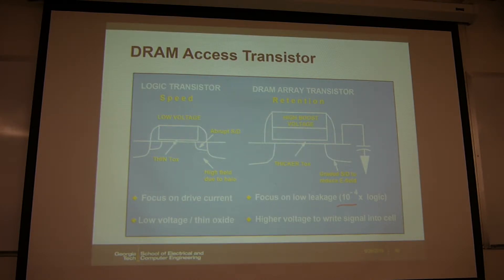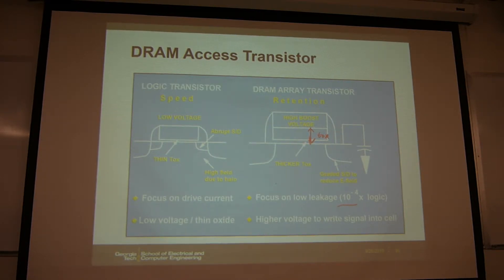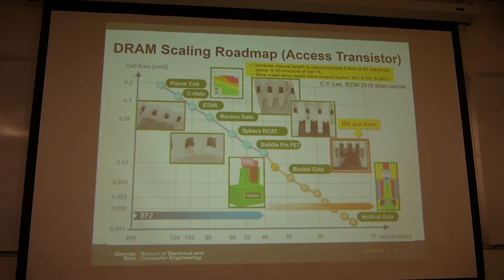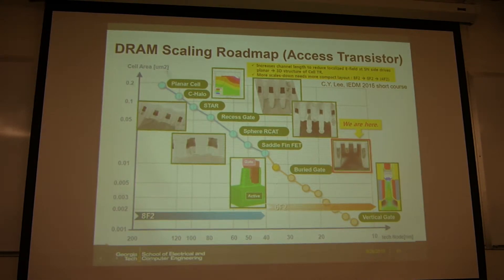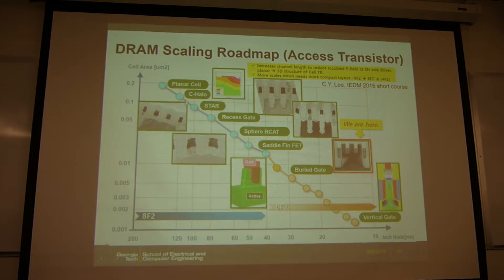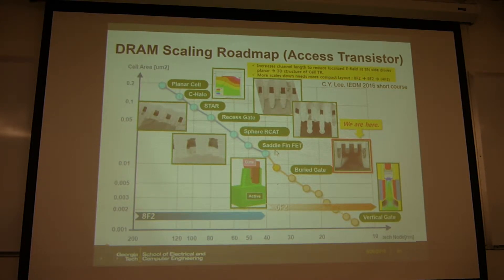To achieve this, we use the recess gate, but also the gate oxide thickness TOX is higher than in logic. This larger TOX also helps with gate overdrive — you can drive a slightly larger voltage for the VPP wordline. Looking at the scaling roadmap for the access transistor: starting from the traditional planar transistor, at 90 nanometers the recess gate was introduced. At 45 nanometers, a saddle structure appeared, which is a combination of the recess gate and FinFETs.